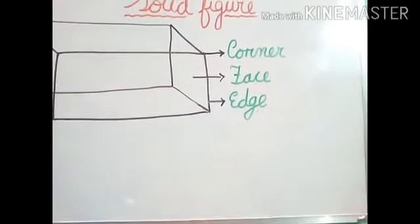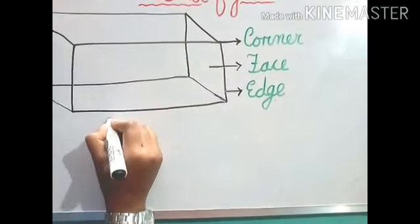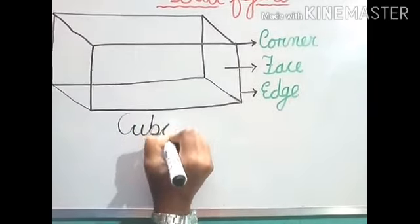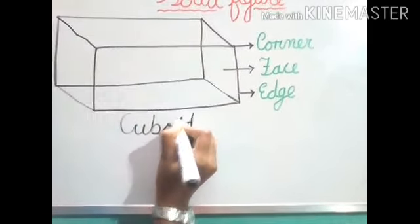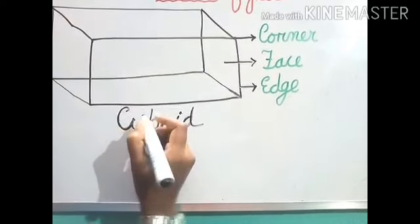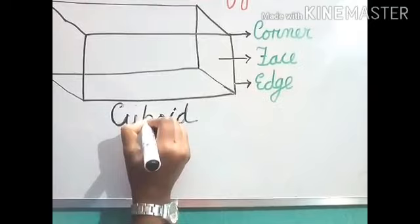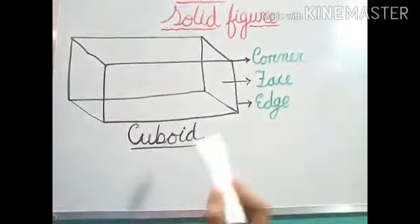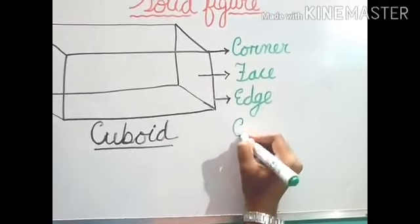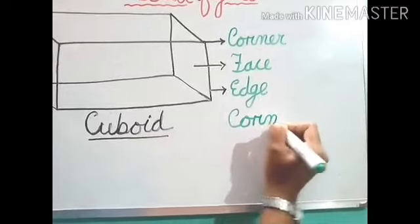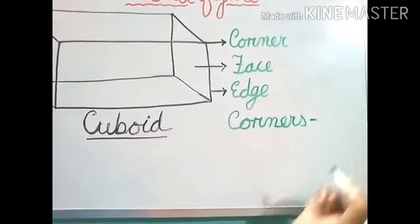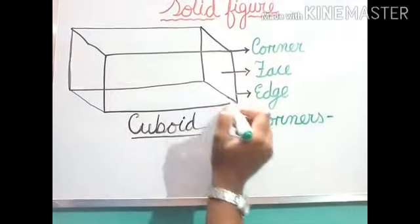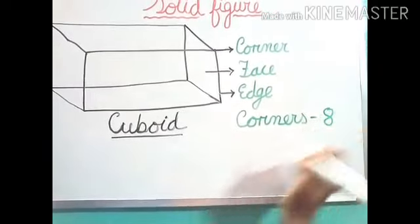Now the name of the shape. This is a cuboid, C-U-B-O-I-D. Cuboid. And cuboid has how many corners? I am going to write it here. Corners, let us find out. 1, 2, 3, 4, 5, 6, 7, 8. Total how many corners? 8 corners.